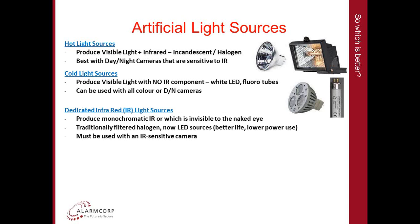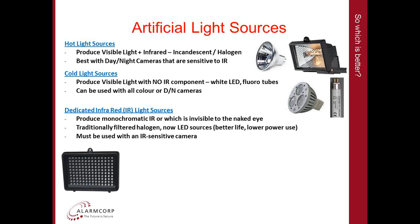Next, dedicated infrared light sources produce a monochromatic IR light output which is invisible or nearly invisible to the naked eye. Traditionally IR has been filtered halogen, but today virtually all infrared sources use LEDs, giving much better life and much lower power usage. However, if you are going to use an infrared light source, you must use a camera that's sensitive to IR. A typical modern LED array used as an IR illuminator is pictured here, along with some metal halide bulbs used for factory downlights and sports stadium lights.